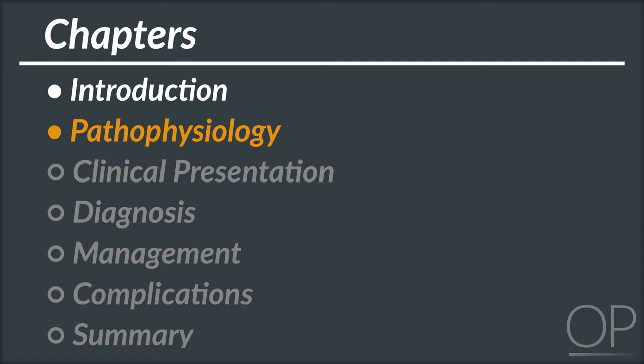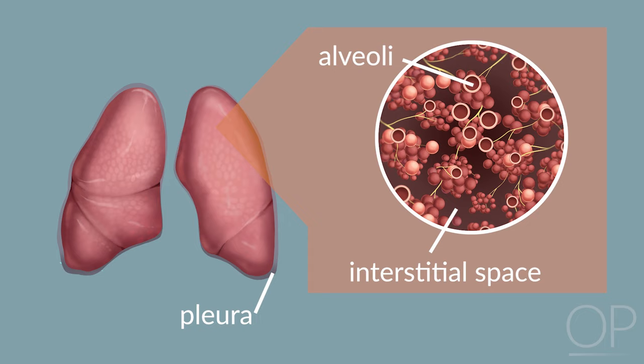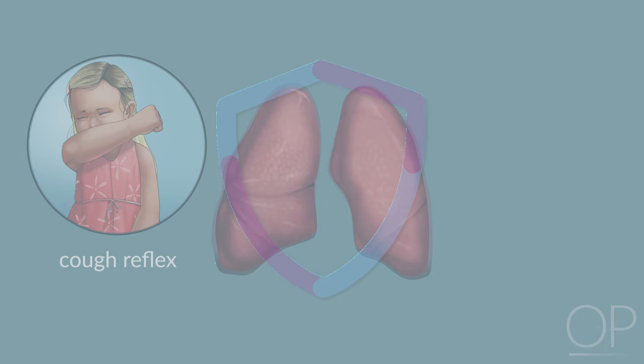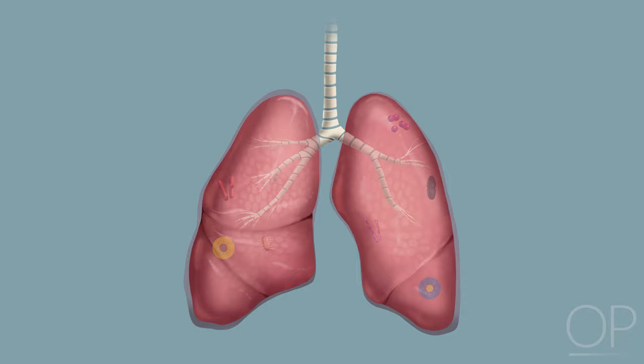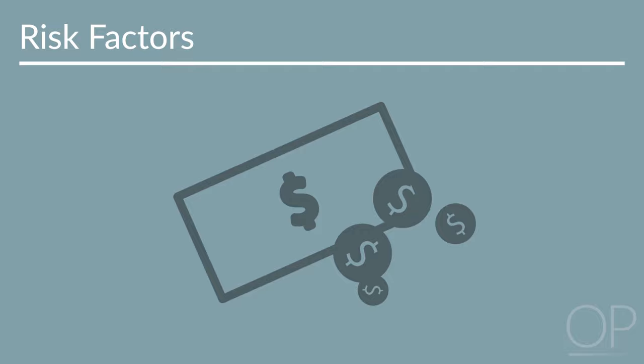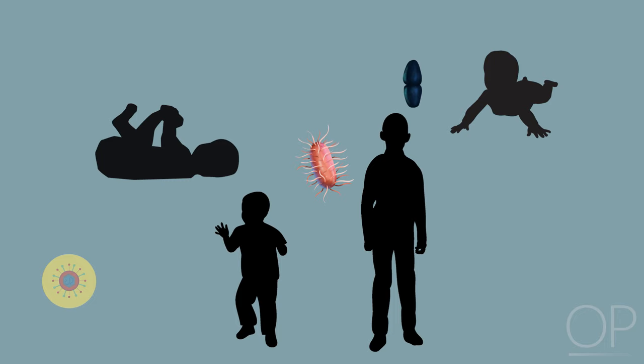Pathophysiology. Pneumonia is a lower respiratory tract infection involving inflammation of the lung parenchyma, particularly the alveoli, interstitial space, and pleura. The lungs contain many defense mechanisms to prevent infection, such as the cough reflex, mucociliary drainage, and humoral and cell-mediated immunity. Deficiencies in one or more of these mechanisms can lead to invasion by pathogens and cause pneumonia. Other risk factors associated with higher rates of pneumonia include poverty, multiple siblings, exposure to tobacco smoke, prematurity, and urban residence.